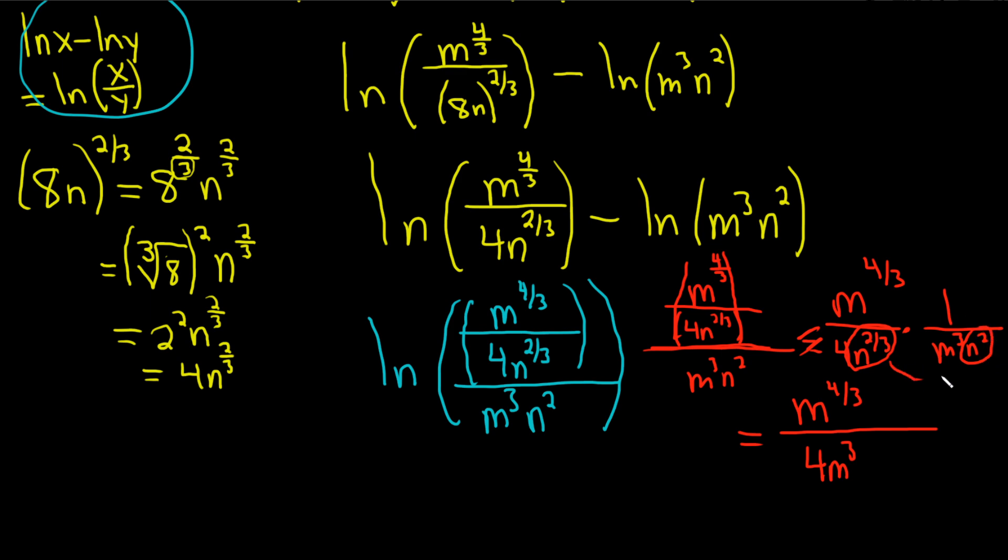So what happens is when you multiply these, you add. You do two-thirds plus two. Two is really six-thirds. So it's two-thirds plus six-thirds, which is eight-thirds.